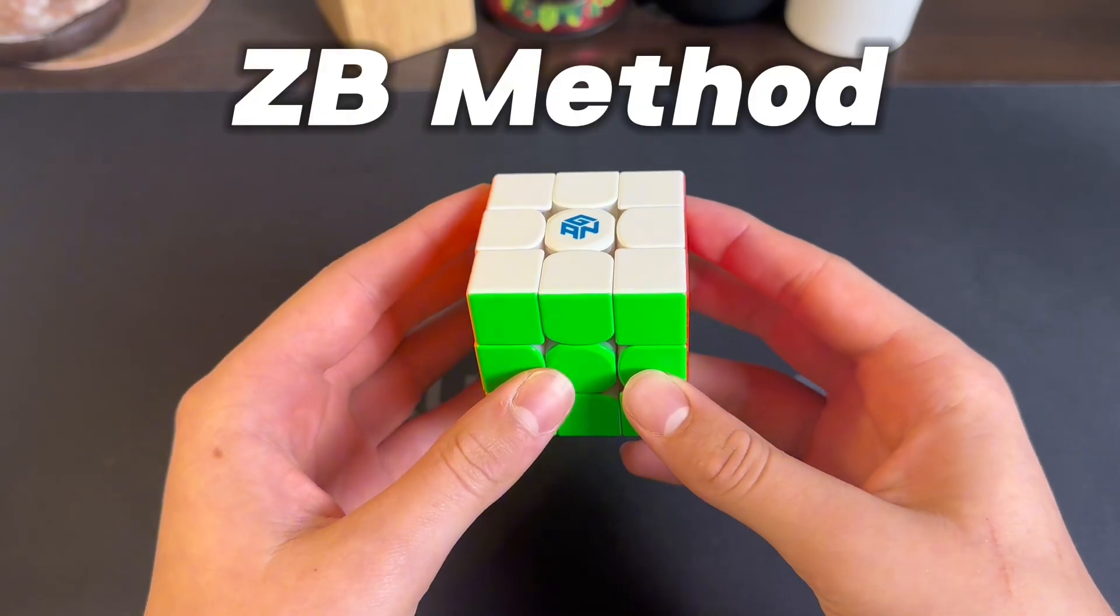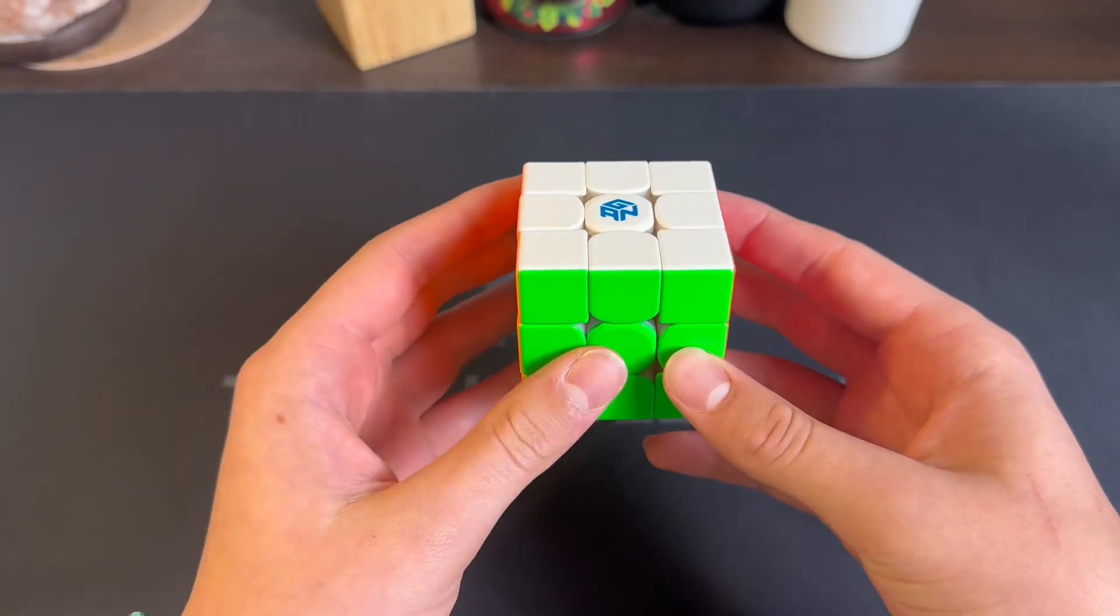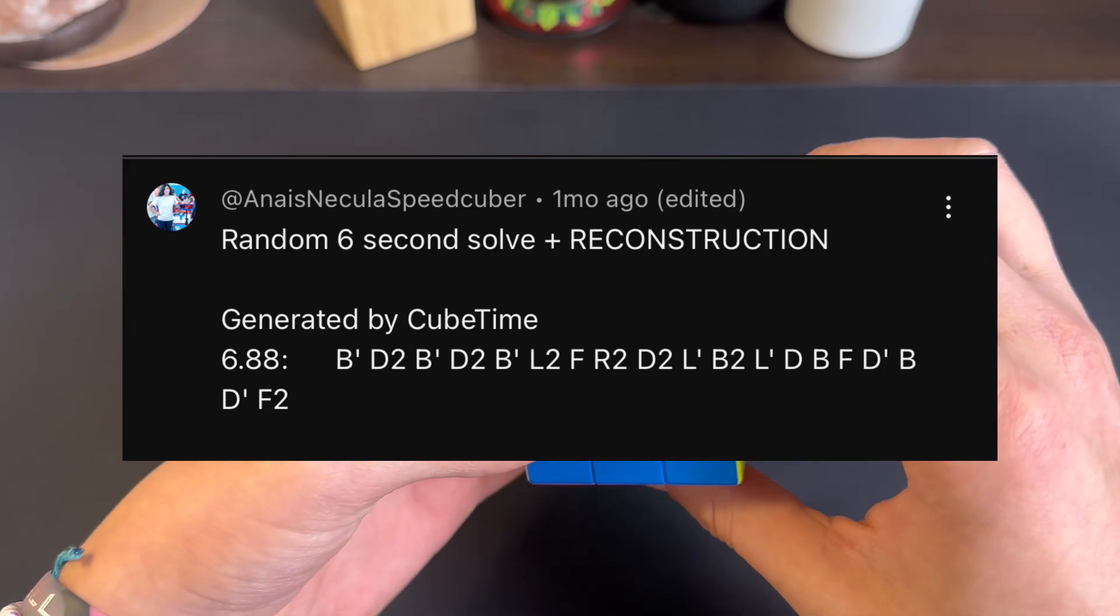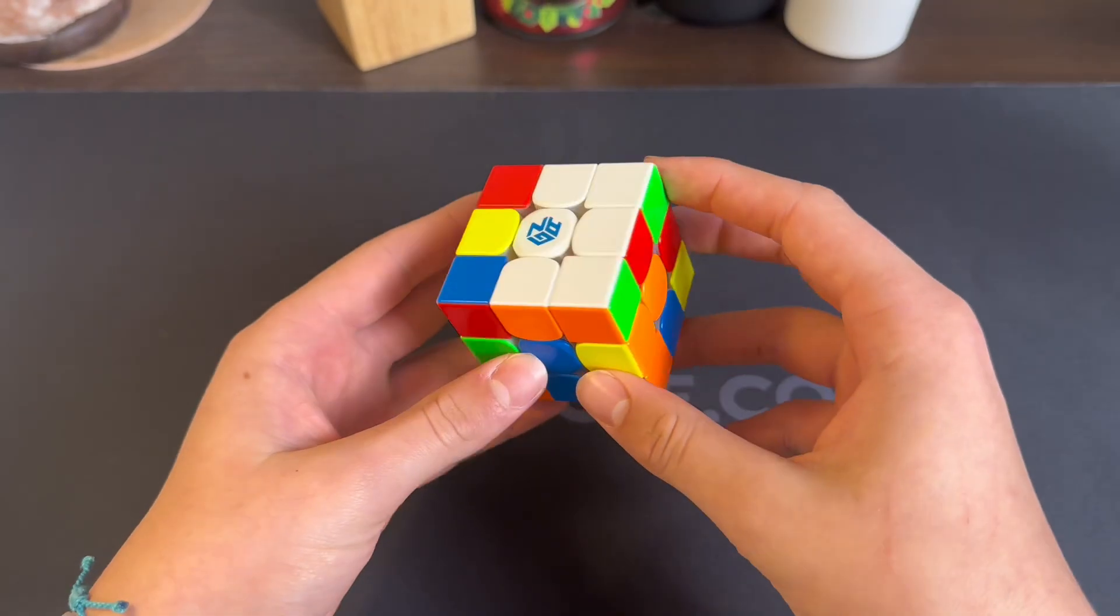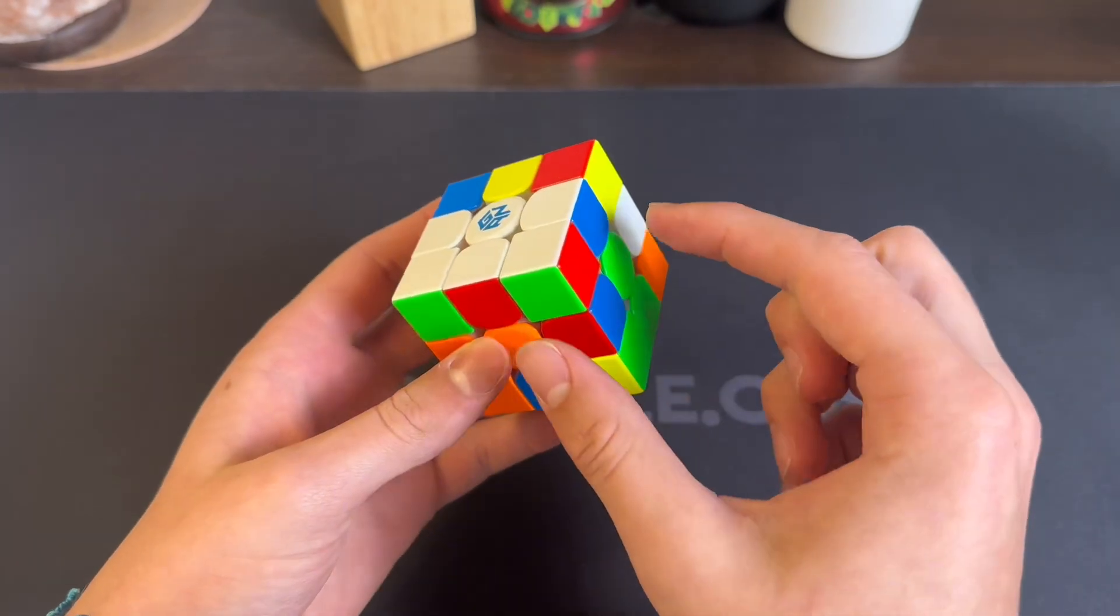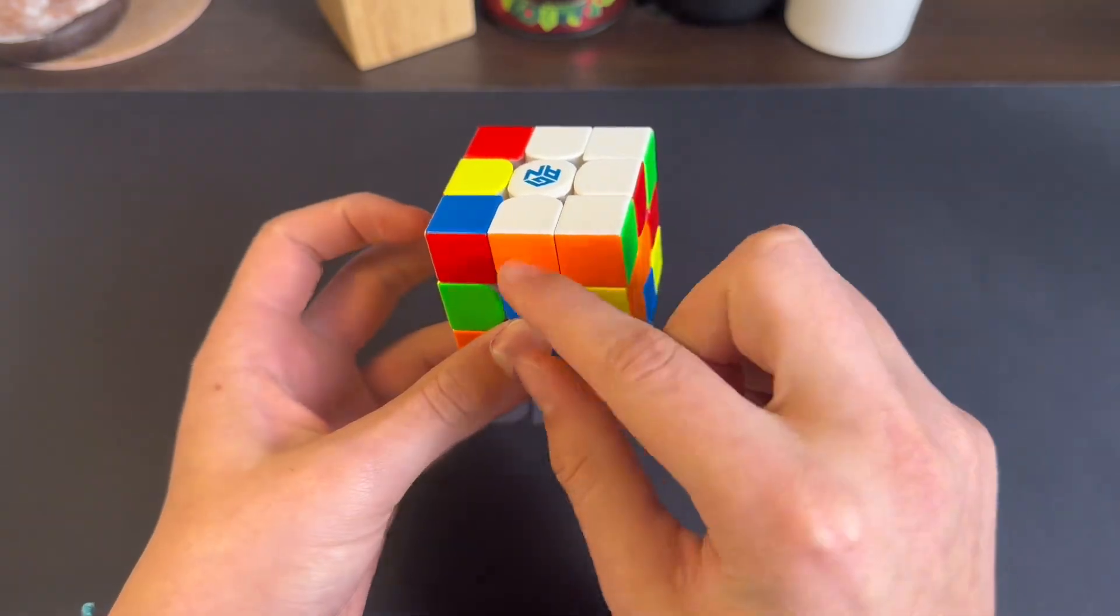Alright guys, we're doing a ZB example solve. Scramble is white top and green front to follow along. This is a crazy scramble. You already have these two solved right here, you have this block connected to this one and you got this one right here.